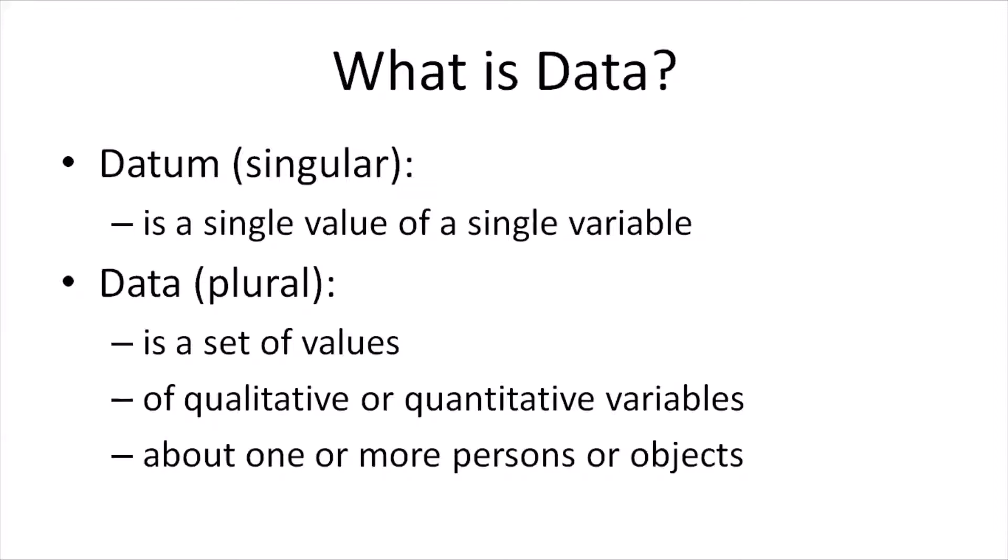Before we go into the concepts of data structuring, let us first understand what is data. Data, whose singular is datum, is basically a single value of a single variable. When we call it data, it is basically plural — it is a set of values of qualitative or quantitative variables about one or more persons or objects.